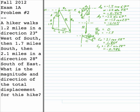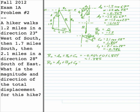Now we've got the x and y components for each of our three vectors. The next step is to add those components into the resultant. The x-component of the resultant is minus 0.469 plus 0 plus 1.854, which is 1.385. The y-component is minus 1.105 minus 1.7 minus 0.986, which works out to minus 3.791. As expected, the x-component is relatively small and positive, and the y-component is relatively large and negative — matching my initial diagram.